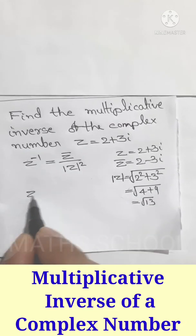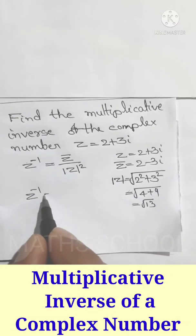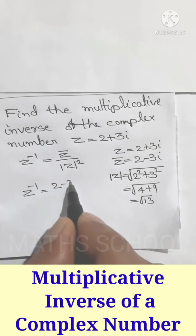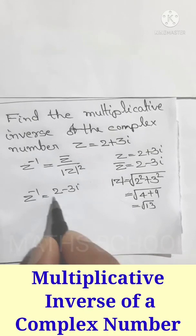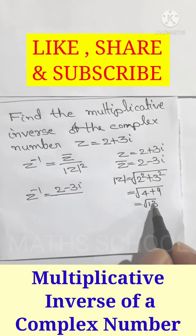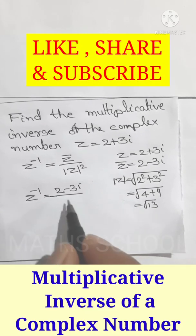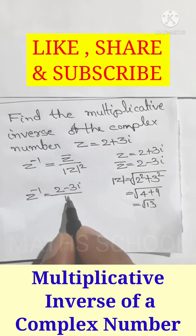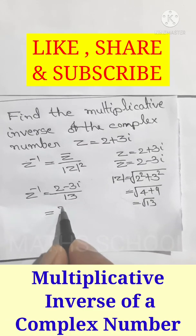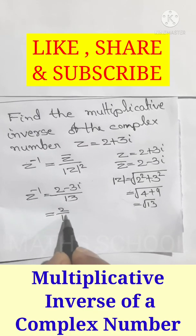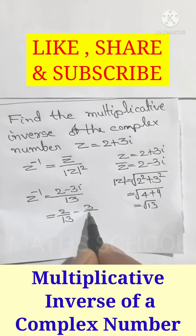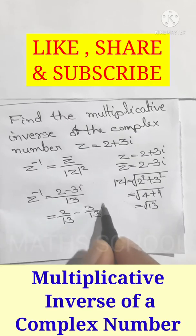Now z inverse equals z conjugate 2 minus 3i divided by modulus of z squared, which is root 13 squared, which is 13. This equals 2 over 13 minus 3 over 13 i.